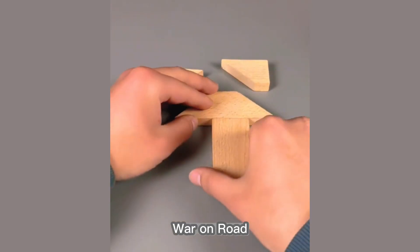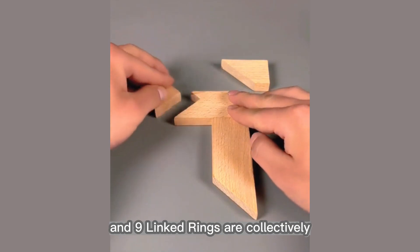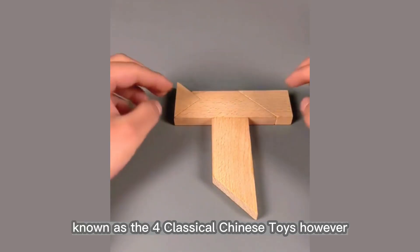A seven-pieces puzzle, War on Road, Kong Ming Lock, and Nine Linked Rings are collectively known as the four classical Chinese toys. However,